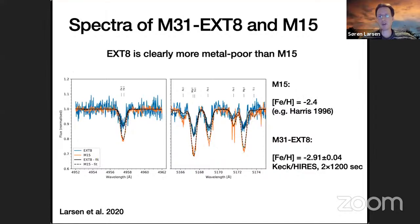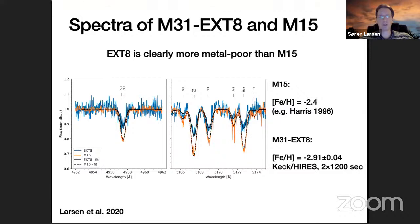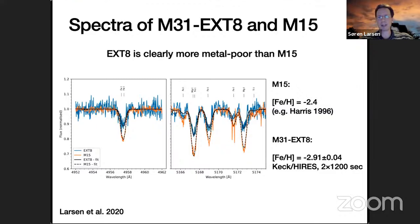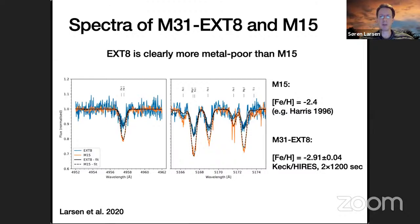EXT8 enters the stage. Here are the raw spectra with model fits: EXT8 is the blue spectrum and M15 — one of the most metal-poor Milky Way globular clusters — is the orange spectrum. Just by looking at the lines, it's clear that EXT8 is significantly more metal-poor. You can see this in the iron feature, another iron line, and in the magnesium B triplet region — the magnesium lines are actually even more depleted in EXT8 than the iron lines. So not only is this cluster very iron-poor, it also has a very low magnesium-to-iron ratio, which is a little bit of a puzzle.